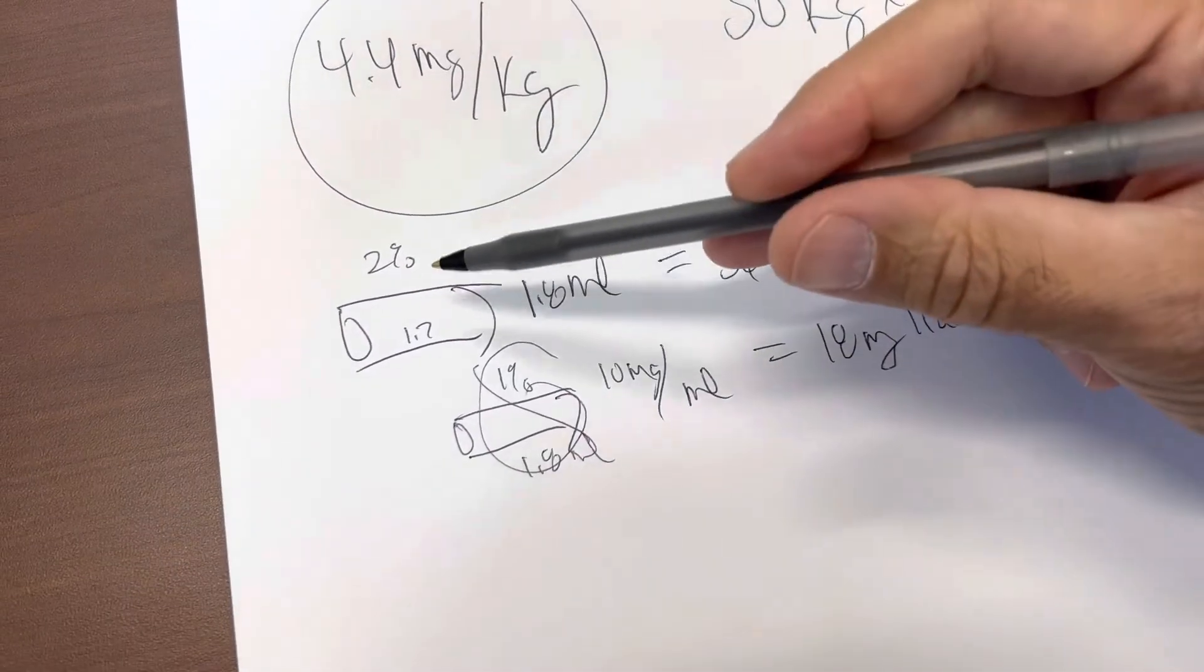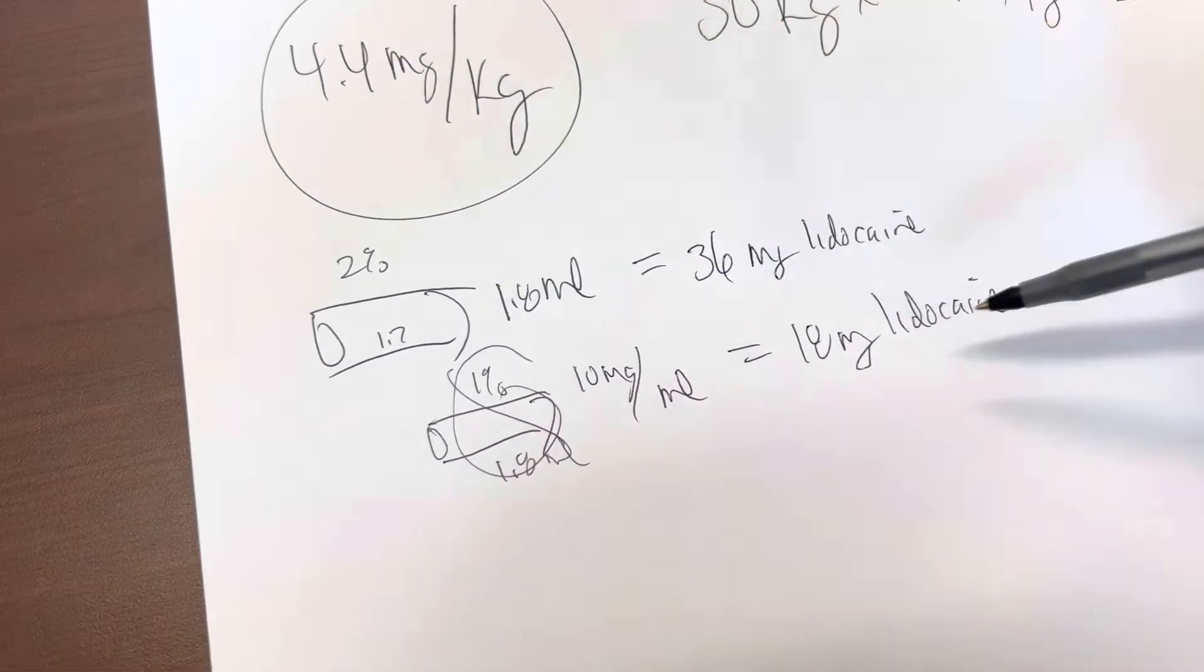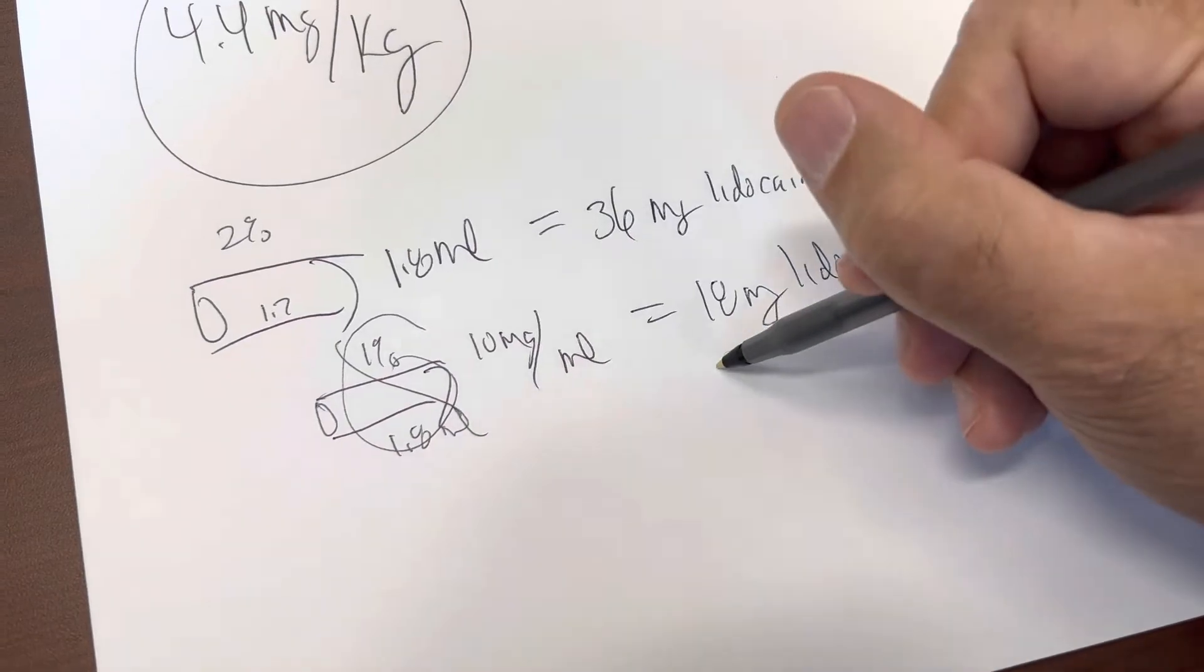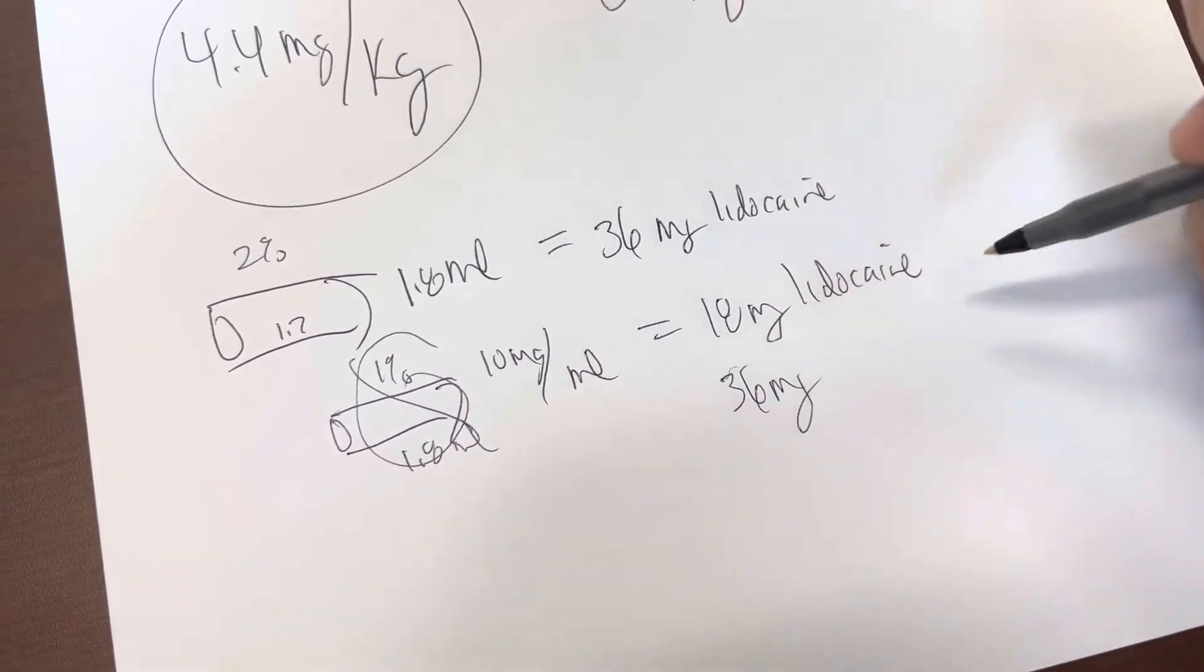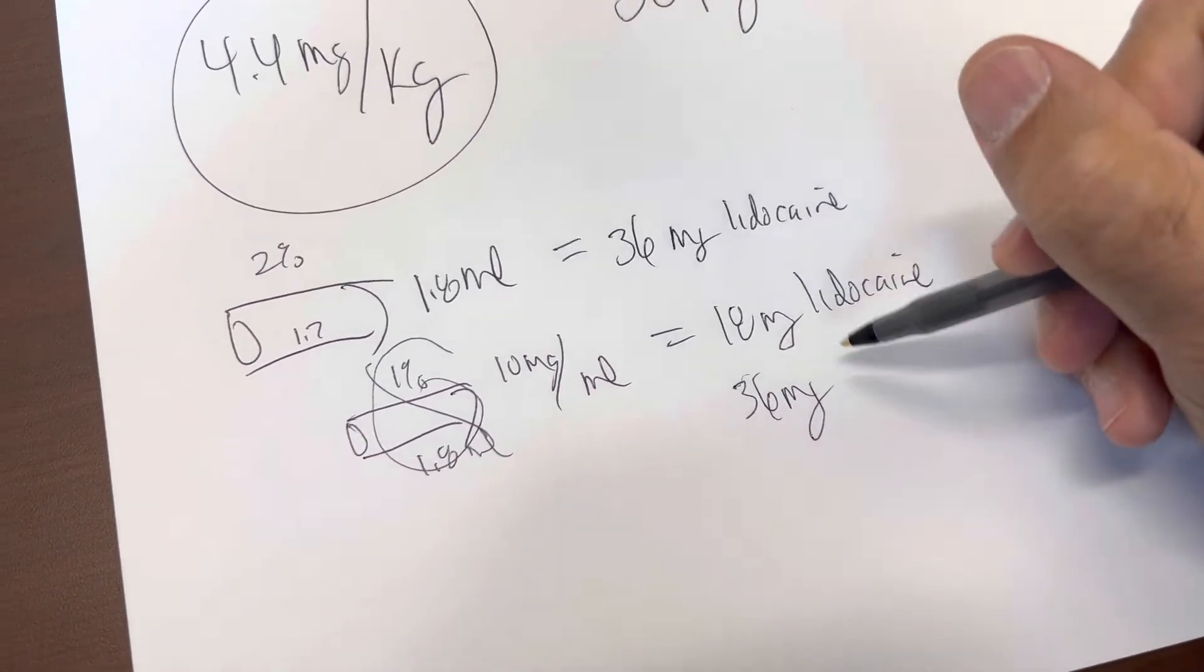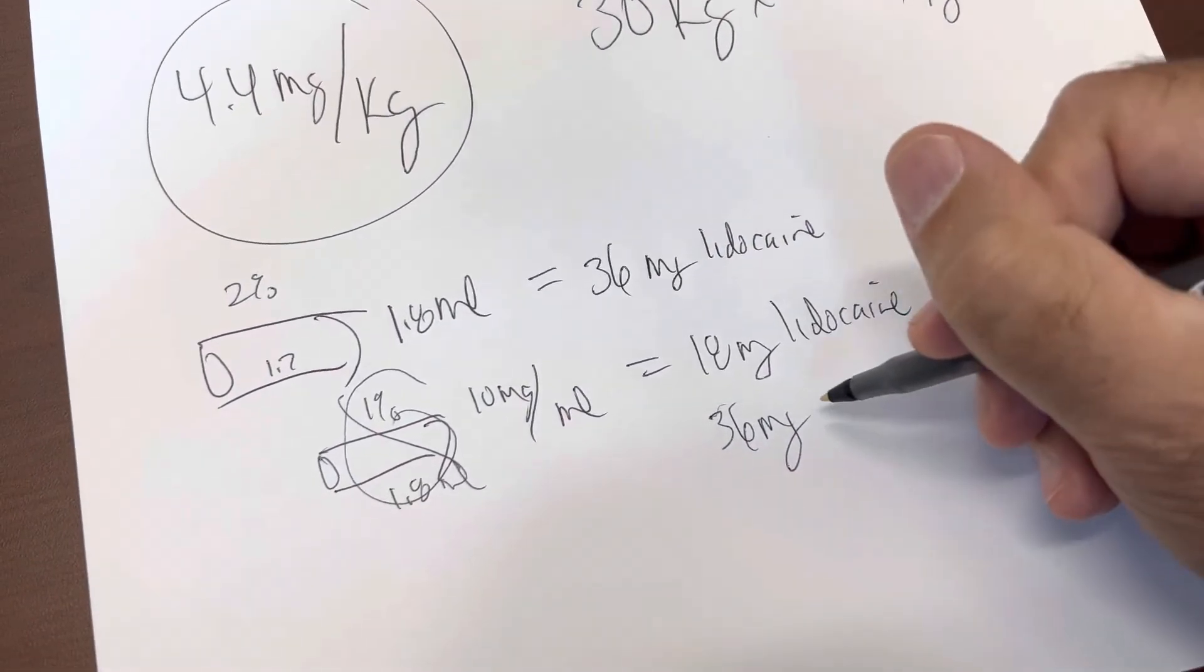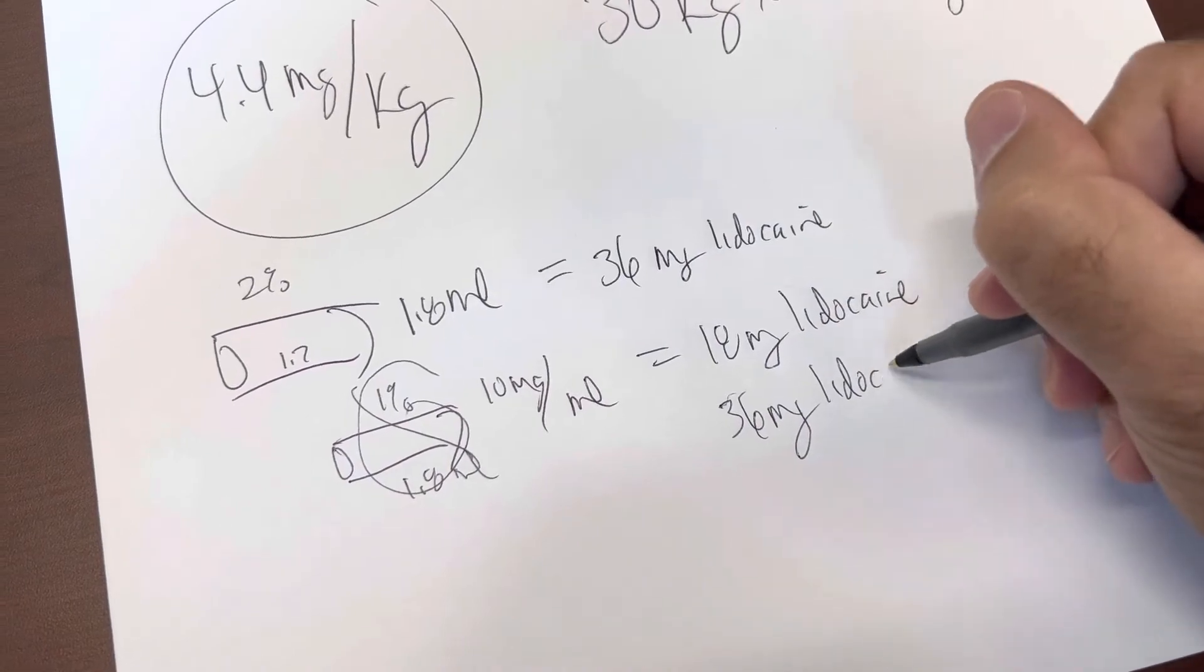We're using a 2% solution. So since it's 2%, we've doubled it. Our 18 milligrams goes to 36 milligrams. So in a 2% carpule of lidocaine, there are 36 milligrams of lidocaine in it.